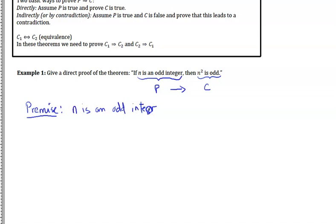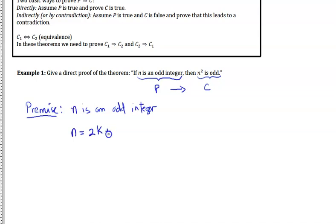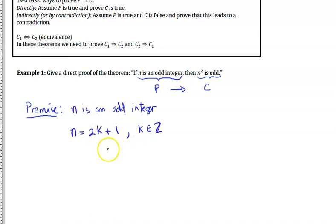When working with integers in proofs, we often use even and odd integers. Because N is an odd integer, I can write N as 2K plus 1, where K is another integer that could be positive or negative. This is the standard way to express an odd integer — 2K is even, and adding 1 makes it odd.